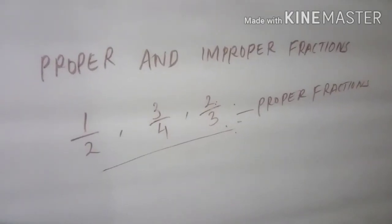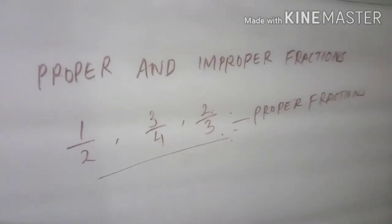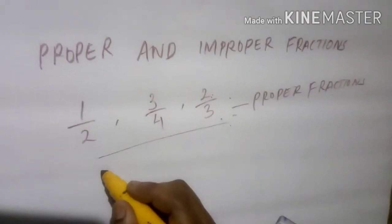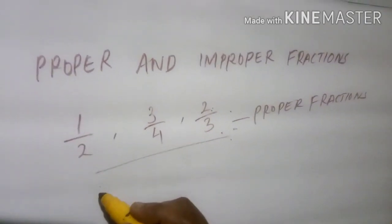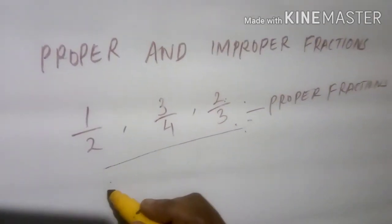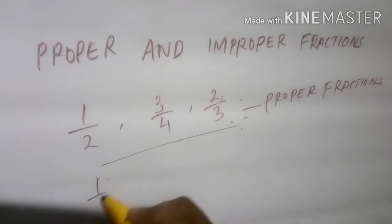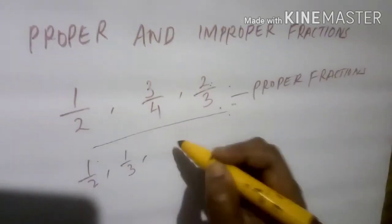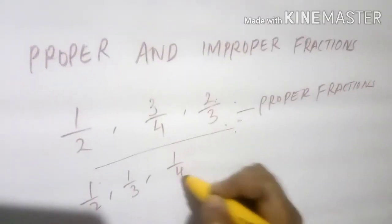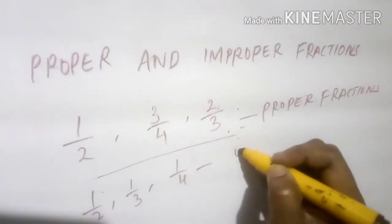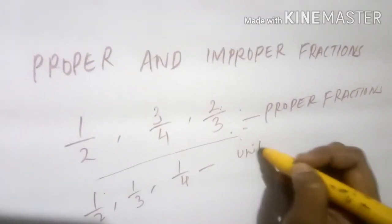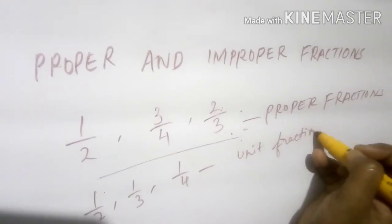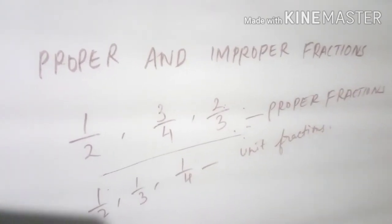Proper fractions with numerator 1 are called unit fractions — like 1 by 2, 1 by 3, 1 by 4. These are called unit fractions.